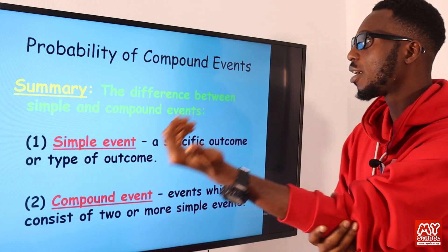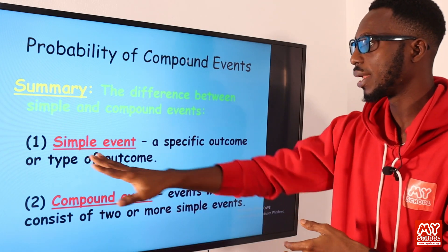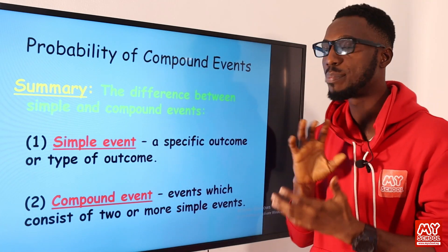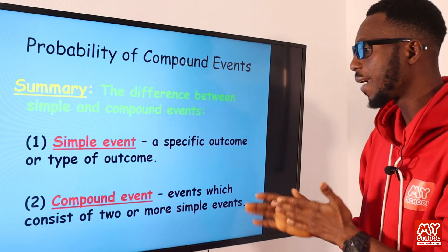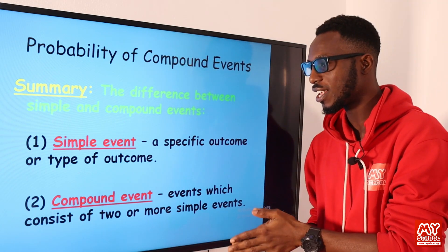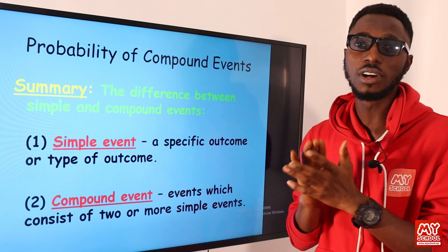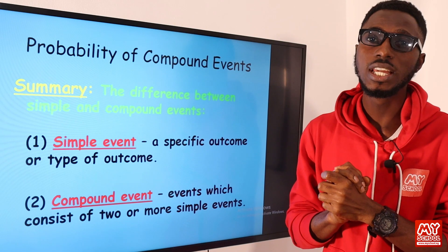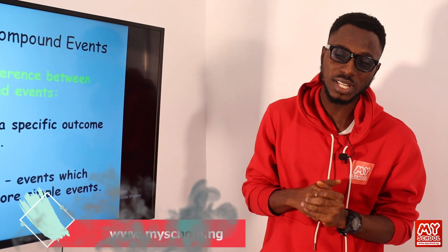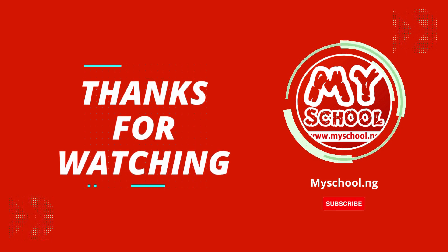Let's look at a summary: a simple event is a specific outcome or type of outcome, while a compound event consists of two or more simple events. There are several kinds of events I'll be introducing — contained in a longer video. All you need to do is click on the link in the description below, which will take you to the MySchool website. Subscribe to have access to the full video lesson, hit the like button, click subscribe, and tap the bell notification so you get informed immediately when we upload the next video lesson. Thank you.